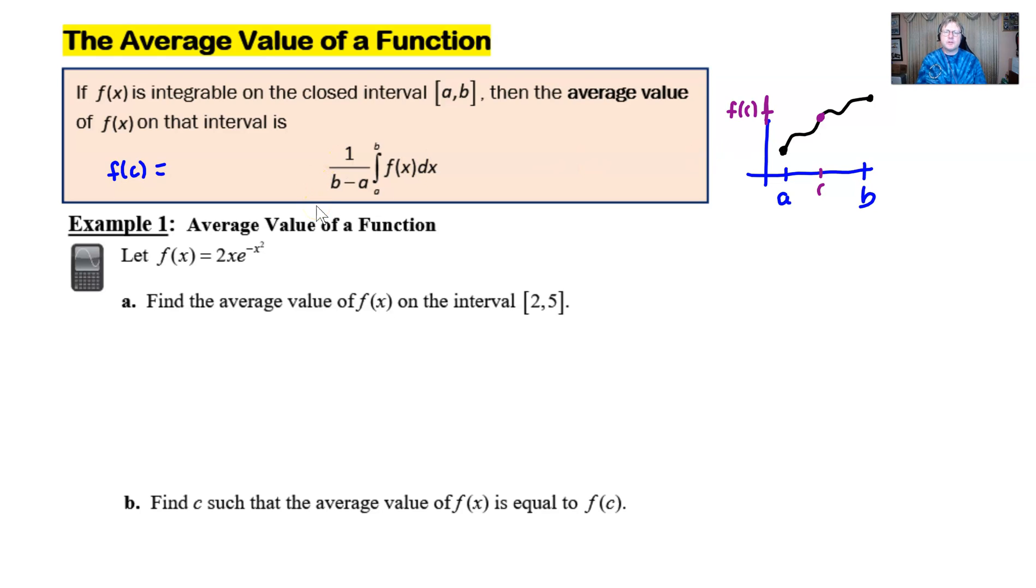I want to just finish up by doing a couple of quick examples that utilize the average value of a function. Let's take a look at number one here. f(x) is 2x e to the negative x squared. Find the average value of f(x) on the interval 2 to 5, and then we're going to find the c such that the average value of f(x) is equivalent to that y value c. This is a calculator active question.